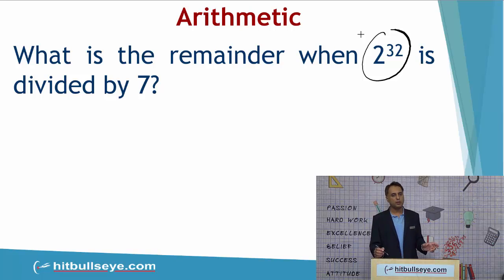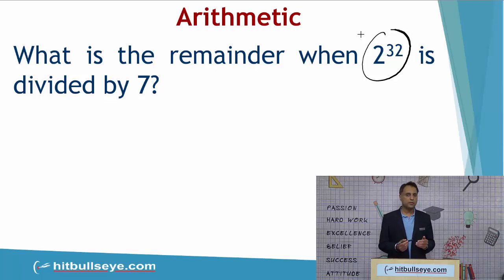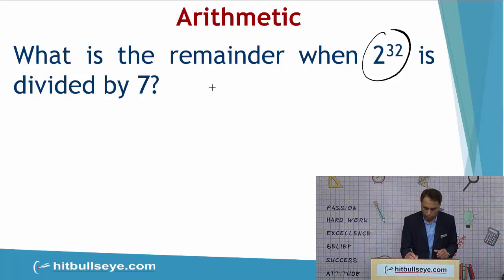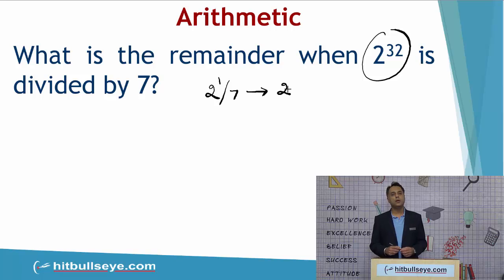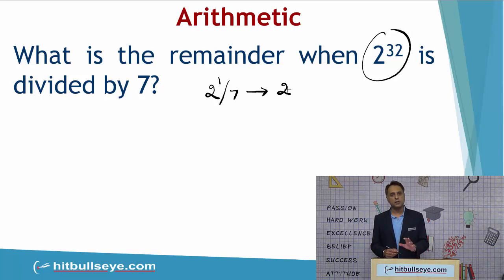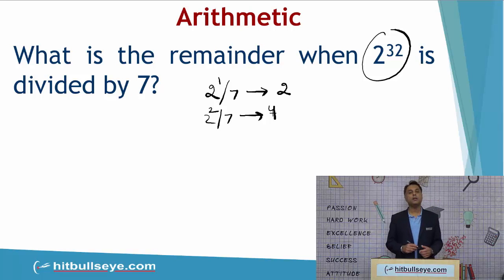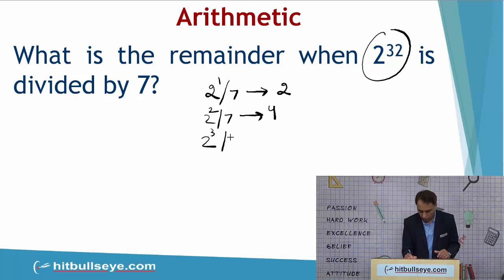We start working on the question by looking at what happens when subsequent powers of 2 are divided by 7. If the question had been 2 to the power 1 divided by 7, the remainder would have been 2, because the numerator is smaller than the denominator. If it had been 2 squared divided by 7, the remainder would have been 4. If it had been 2 cubed divided by 7, the remainder would have been 1.